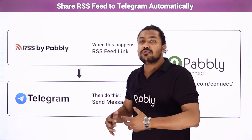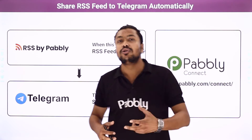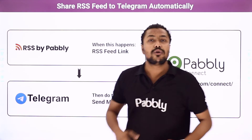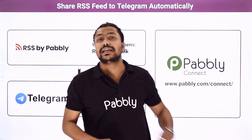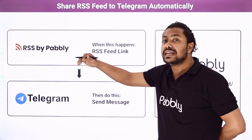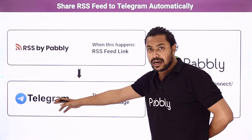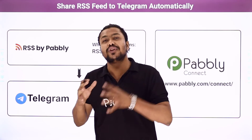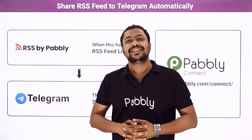This automation can be used for various different purposes — this is just an example. To do this automation we are going to use an integration and automation service called Pably Connect, which will help us connect RSS feed links from other websites to our Telegram account. If you want to learn this useful automation, come with me to the screen.